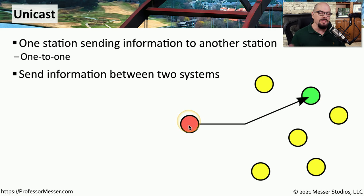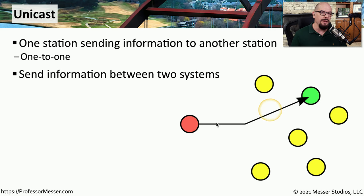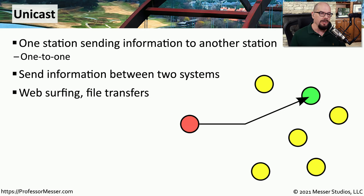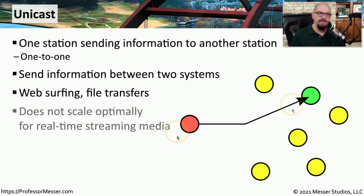This is the type of communication where one device will make a request to a server, and that server might respond to that individual request. So if you're connecting to a web server or you're performing a file transfer, it's probably using a unicast communication. This works great when one device needs to communicate to another.